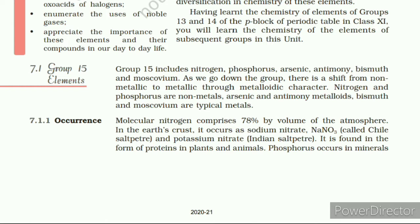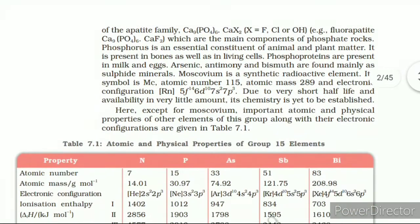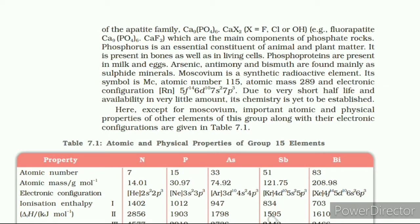7.1.1 Occurrence. Molecular nitrogen comprises 78 percent by volume of the atmosphere. In the earth's crust it occurs as sodium nitrate NaNO₃ called Chile saltpetre and potassium nitrate called Indian saltpetre. It is found in the form of proteins in animals and plants. Phosphorus occurs in minerals of the apatite family, which are the main components of phosphate rocks. Phosphorus is an essential constituent of animal and plant matter; it is present in bones as well as in living cells, and phospho-proteins are present in milk and eggs.